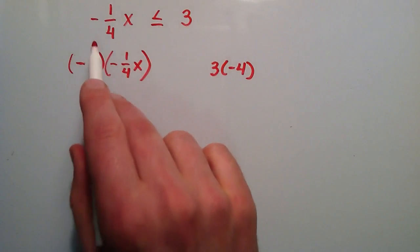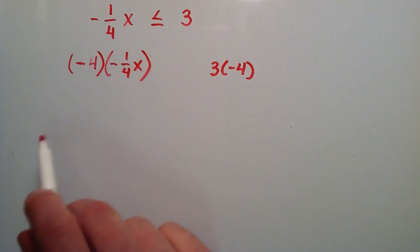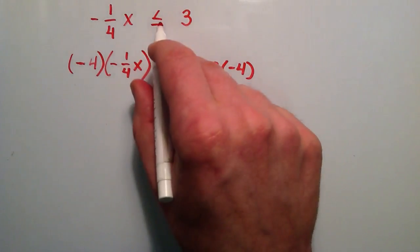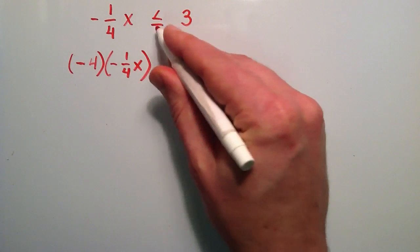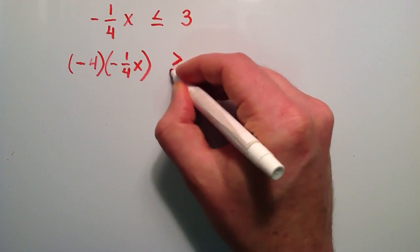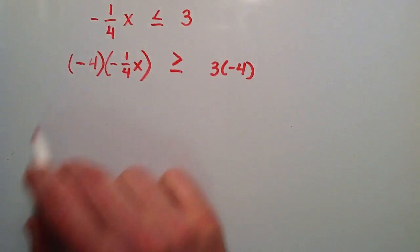And anytime we multiply or divide an inequality by a negative number we need to flip the sign. So this less than or equal to sign now becomes greater than or equal to since we multiplied by a negative number.